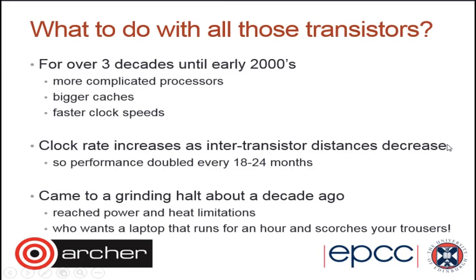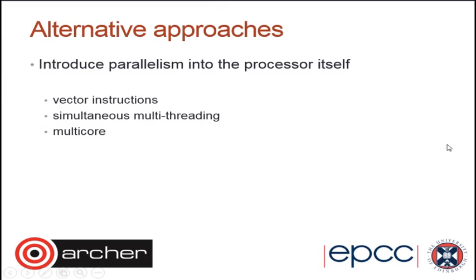It means we're still getting lots more transistors every year onto a processor, but we can't use those to make individual processors go faster. So there are three things processor manufacturers have been doing to use those transistors to make the overall processor go faster without making individual components go faster. One is something called vector instructions, which are very important for modern processors. Another is simultaneous multithreading. And the third is what we call multicore processors — the idea that within a single processor, instead of having just one processing unit, we have many of them, because we've got all these transistors but can't make one big processor out of them, so we make a few little ones and put them together.